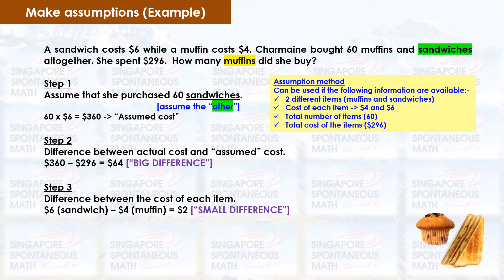Step 3: Find the difference between the cost of each item. $6 minus $4 equals $2. Let's call this the small difference.